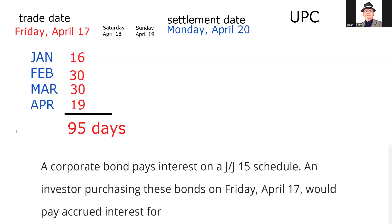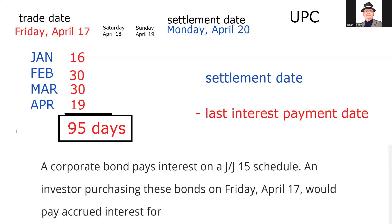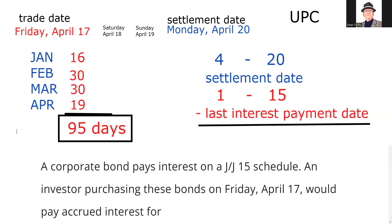I have a shortcut I'd like to share. I call this, for lack of imagination, the long method — but here's the shortcut: take the settlement date and subtract the last interest payment date. Settlement date here is 4/20 — April is the fourth month, and 20 is the settlement day. Subtract the last interest payment date: January is month one, so minus 15. One from four is three, and every month has 30 days, so that's 90, plus 5 equals 95 days.